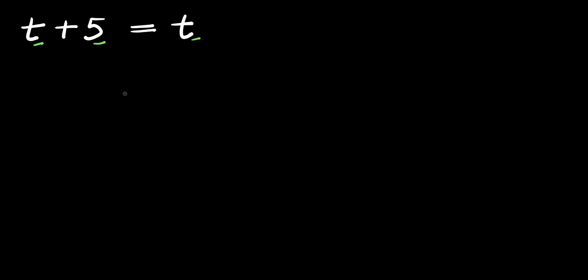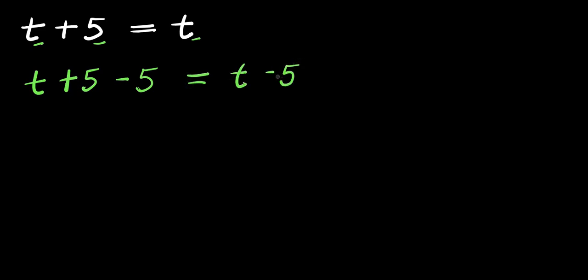Now I can consider this particular scenario. Let's subtract 5 from both sides of this equation. I have t plus 5, then I subtract 5 from here, equals t minus 5. So 5 minus 5 is 0, so I have t equals t minus 5.